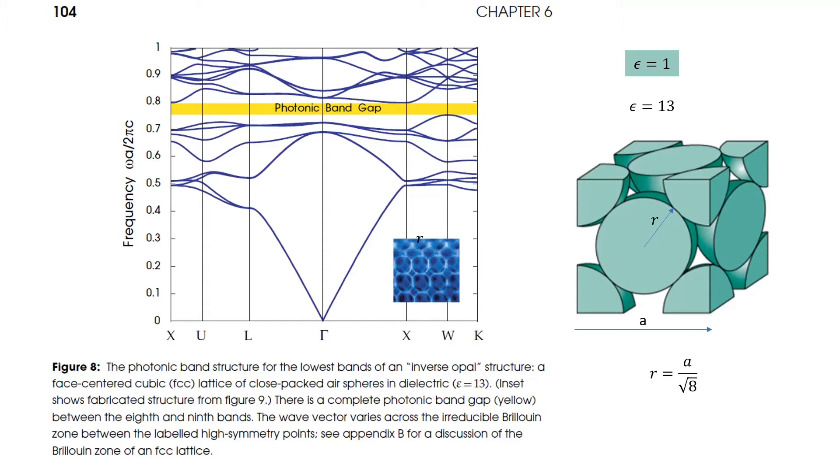Our unit cell is basically a face-centered cubic lattice as shown on the right here, where these spheres are actually air so they have epsilon of 1, and the surrounding of these spheres is a high dielectric material with epsilon equal to 13.